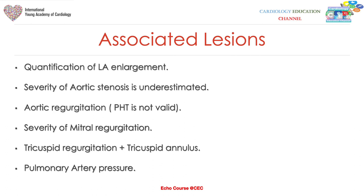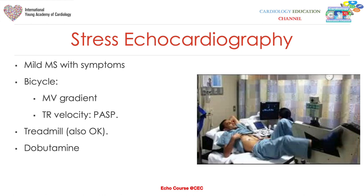Associated lesions to assess include quantification of left atrial enlargement, aortic stenosis severity — which is underestimated in mitral stenosis patients — aortic regurgitation (significant AR invalidates pressure half-time), severity of associated mitral regurgitation, tricuspid regurgitation, and tricuspid annulus width, as this may influence the decision for tricuspid valve repair during surgery.